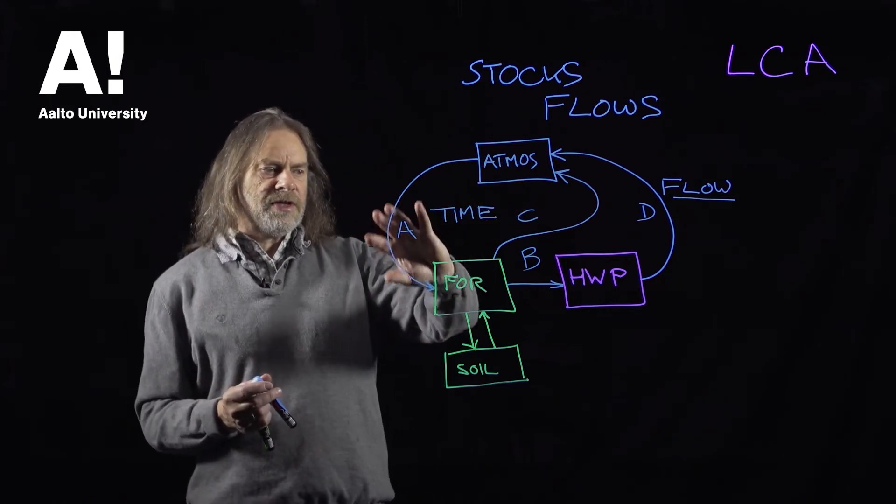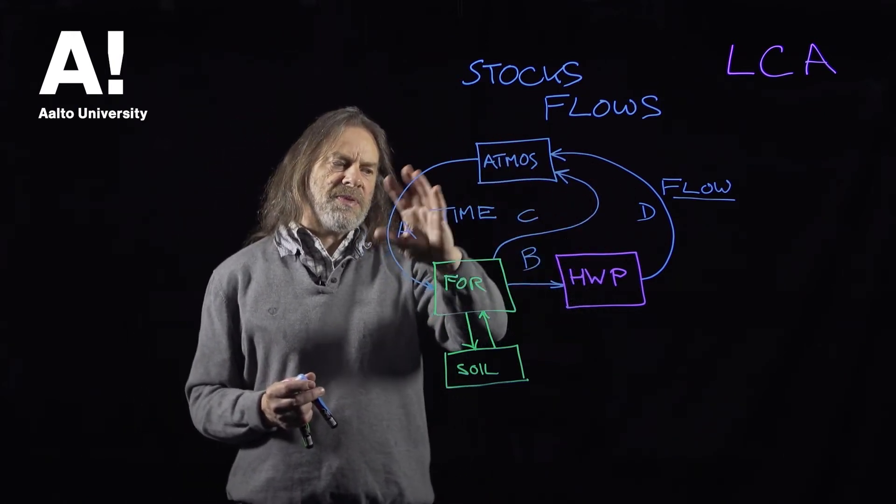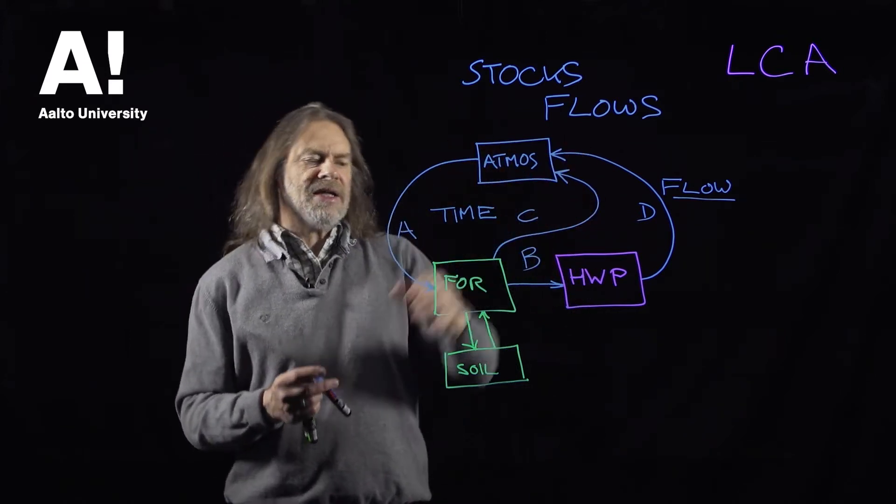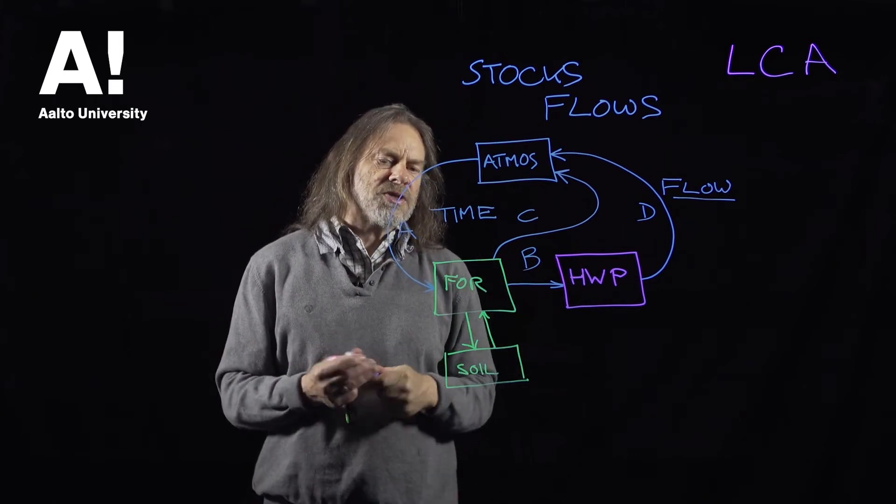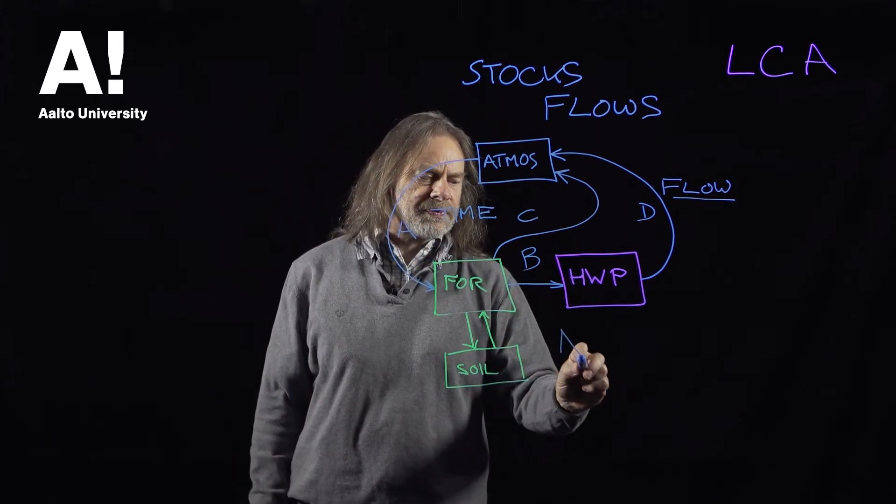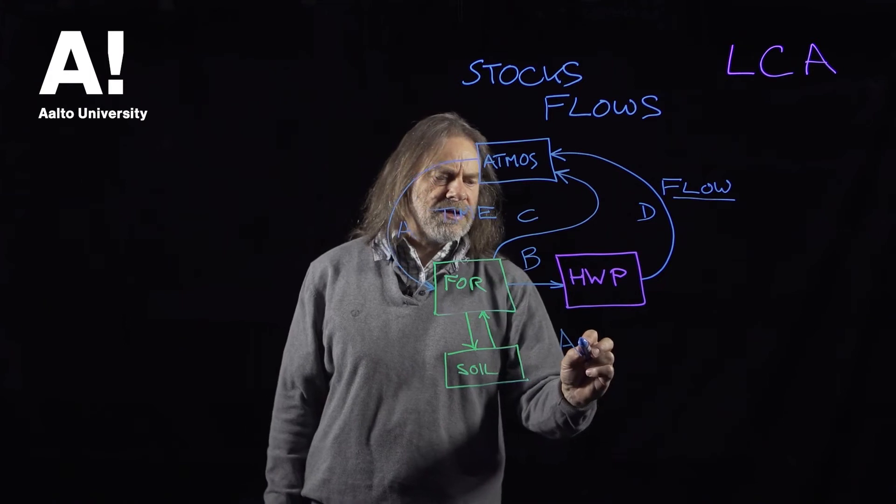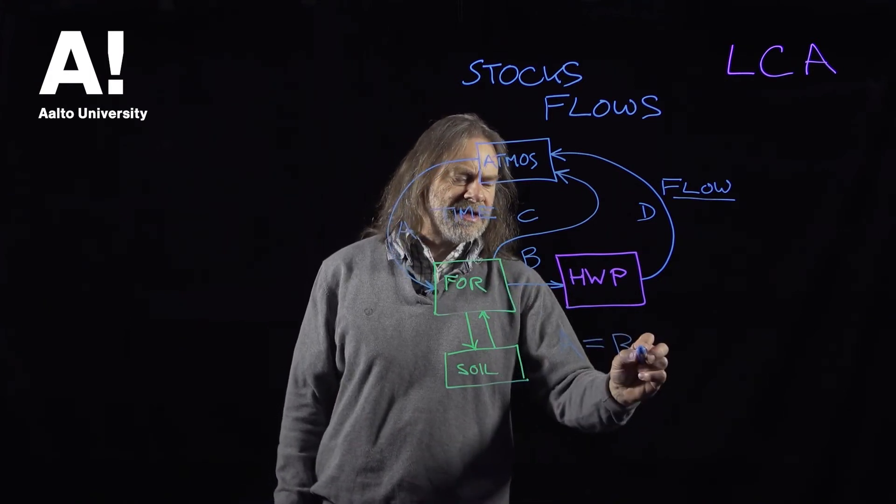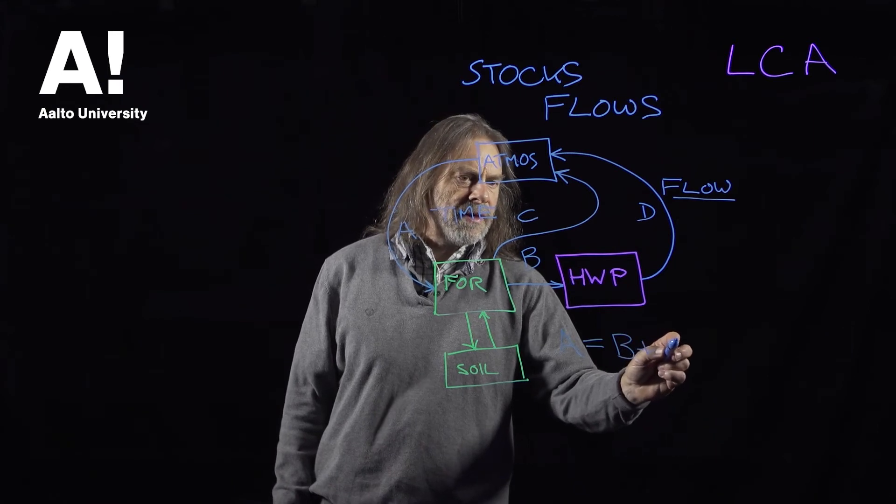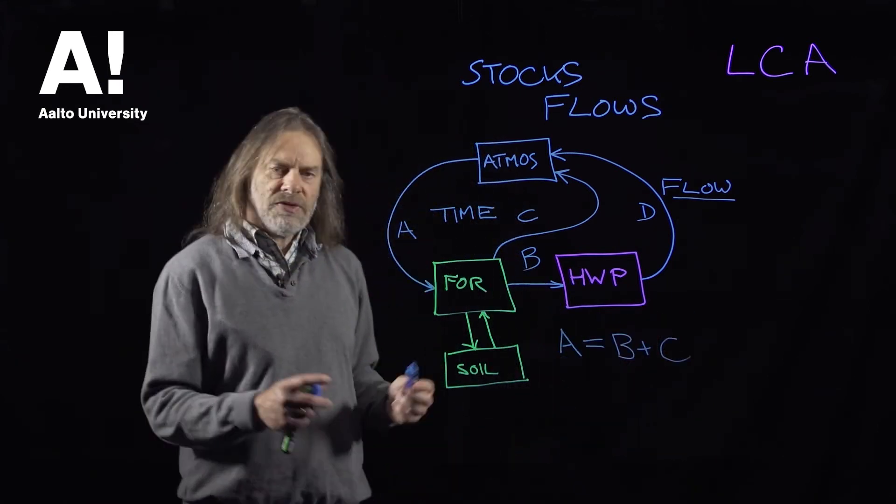So for this flow to be in balance so that the atmosphere and the forest is in balance, we want the flow A into the forest to be equal to the flow out into the harvested wood product pool and the natural flow to at least be equal.